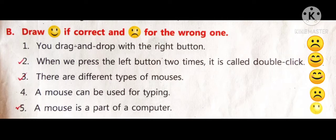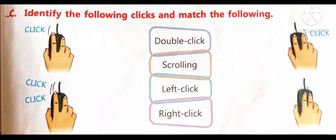Five number. A mouse is a part of a computer. Yes, it is a part of a computer. So, make a smiley face. Now, C number.